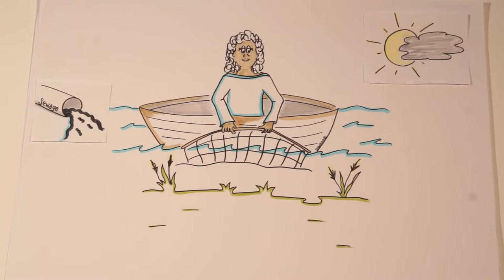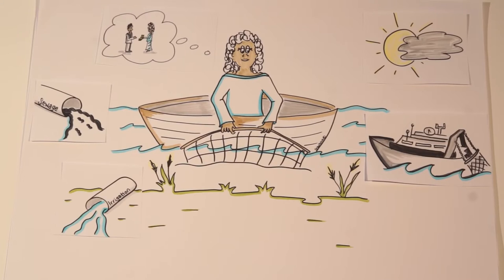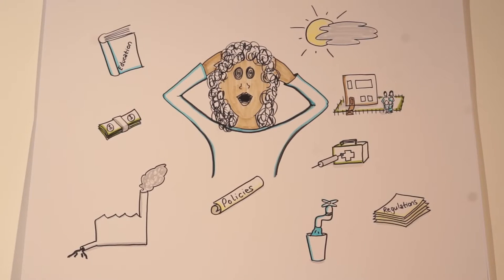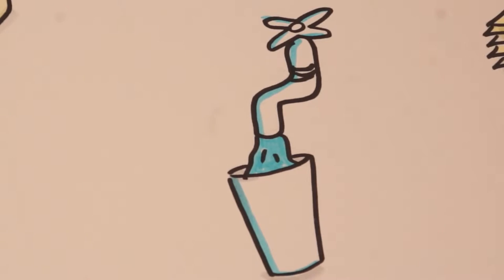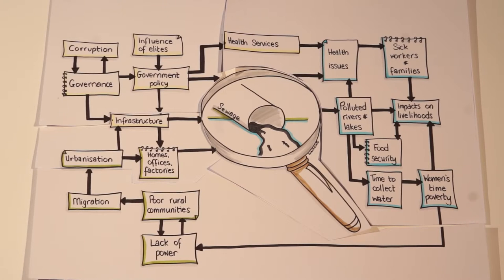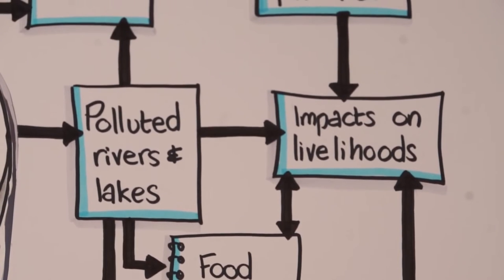You can unpack any of the problems facing the fishermen in the same way, and you will find a similar complex web of stakeholders and issues that interact with each other. These factors and the way they relate to each other is a system. As you can see, systems can get quite complicated.